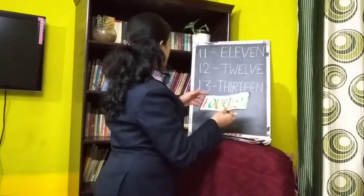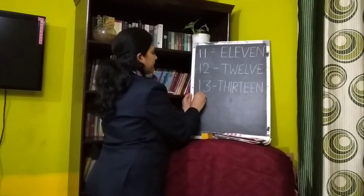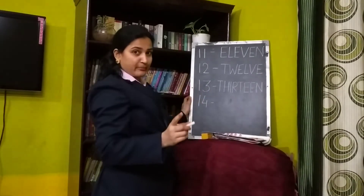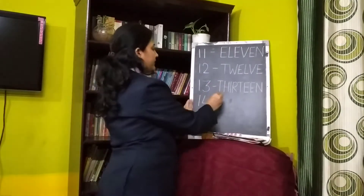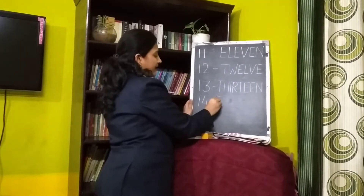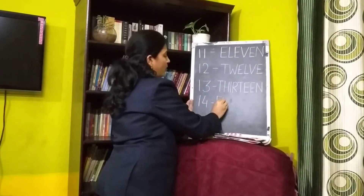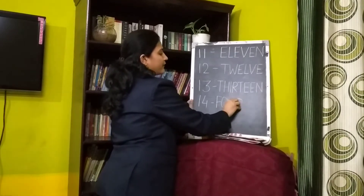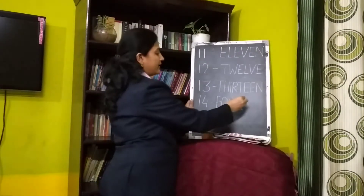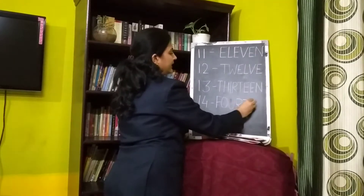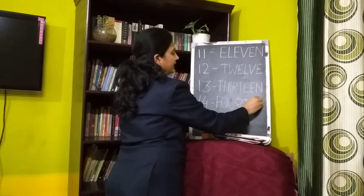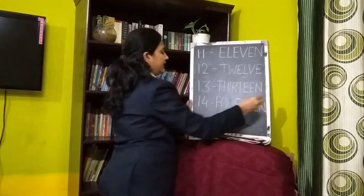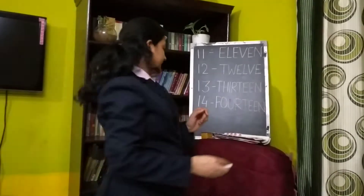Help me in writing fourteen. 1, 4 — fourteen. First tell me spelling of four: F-O-U-R. Then T-E-E-N. Fourteen. Okay.